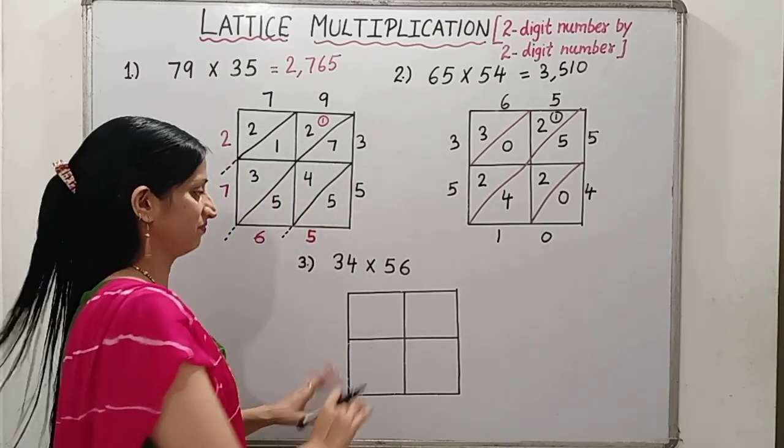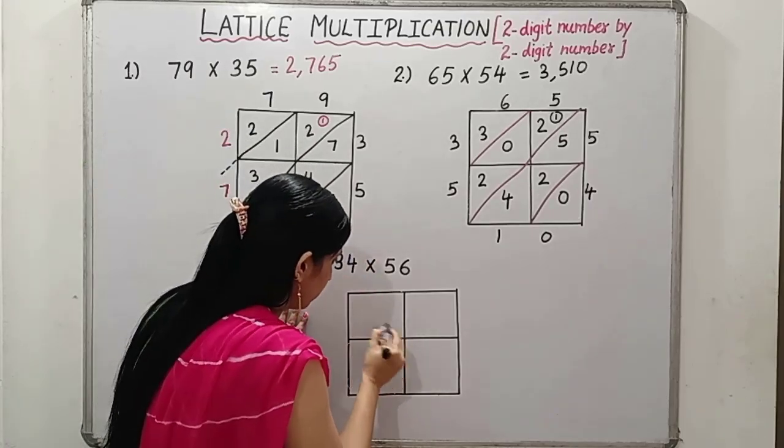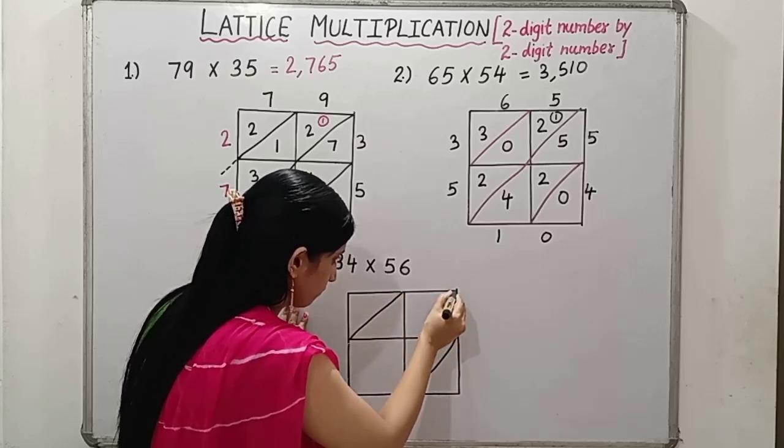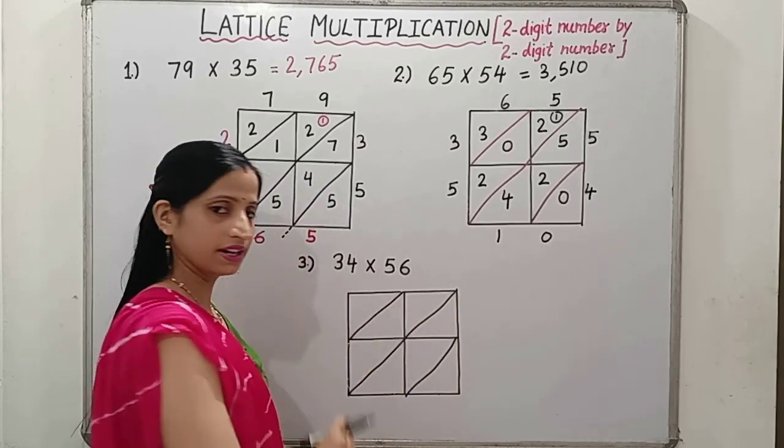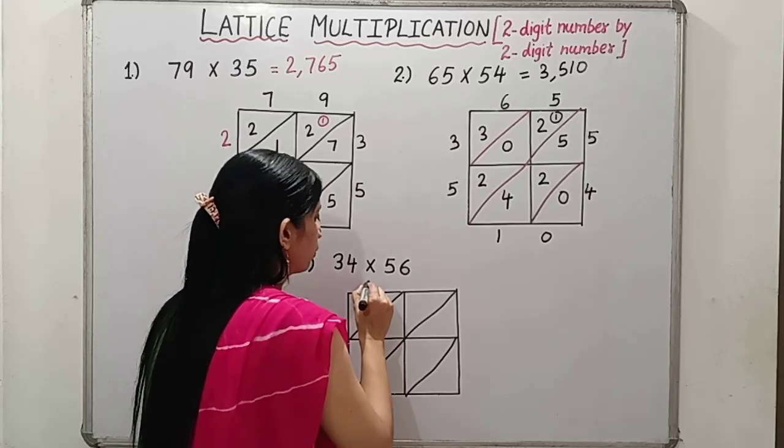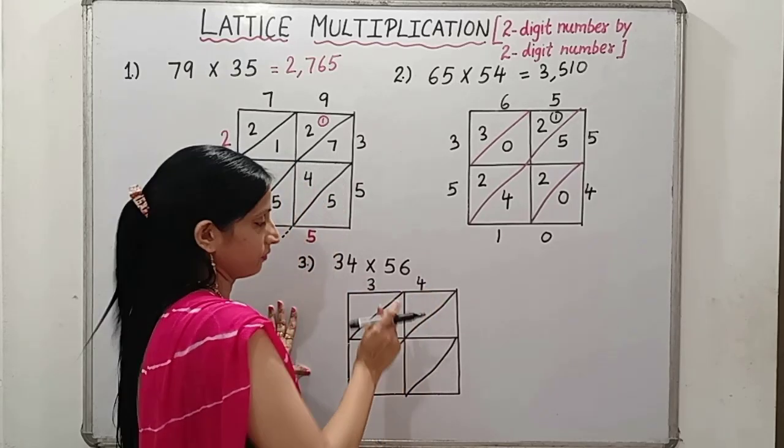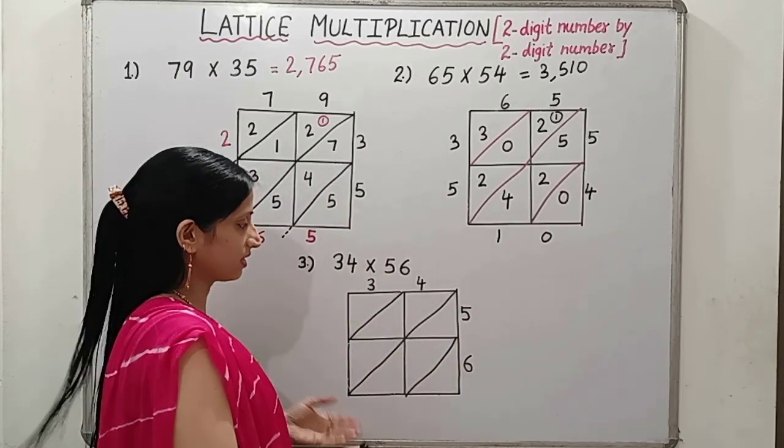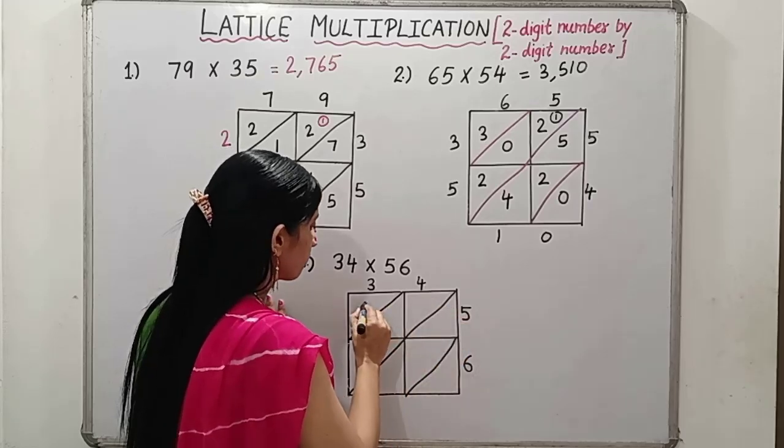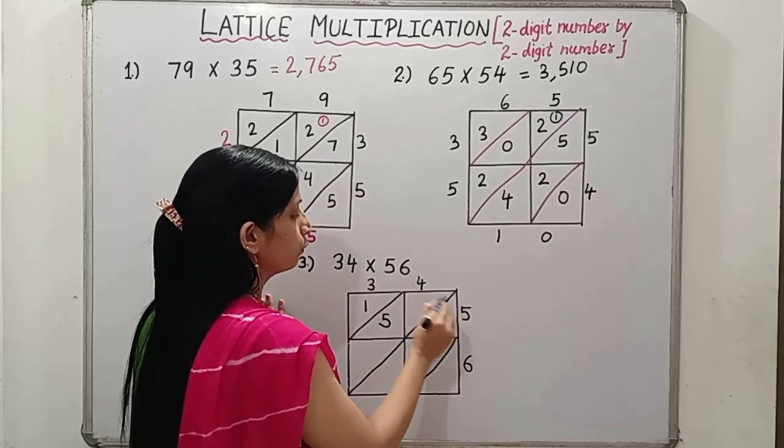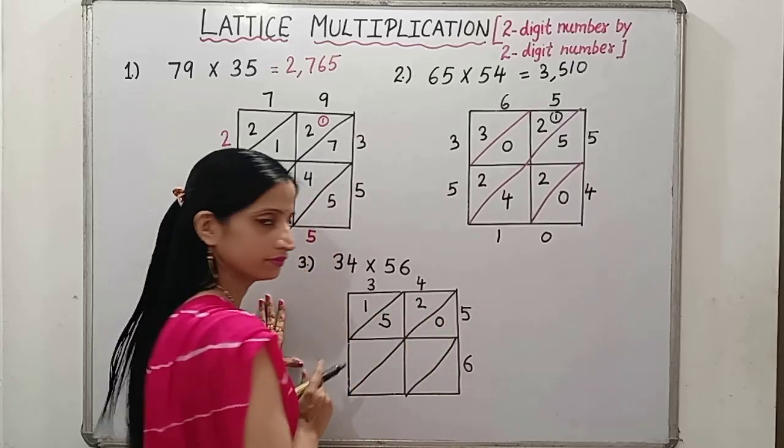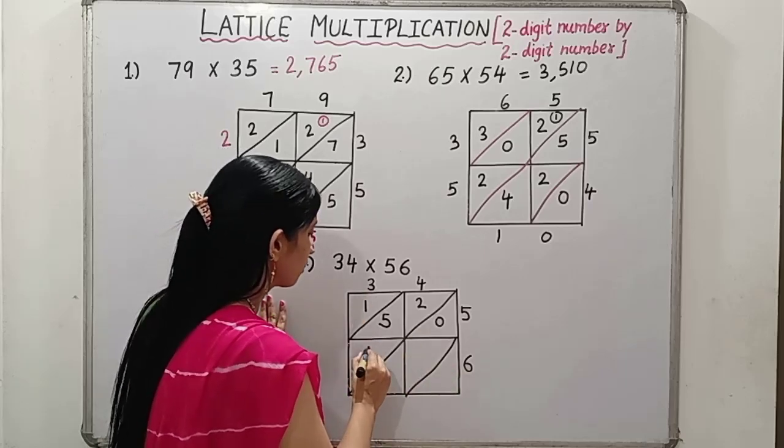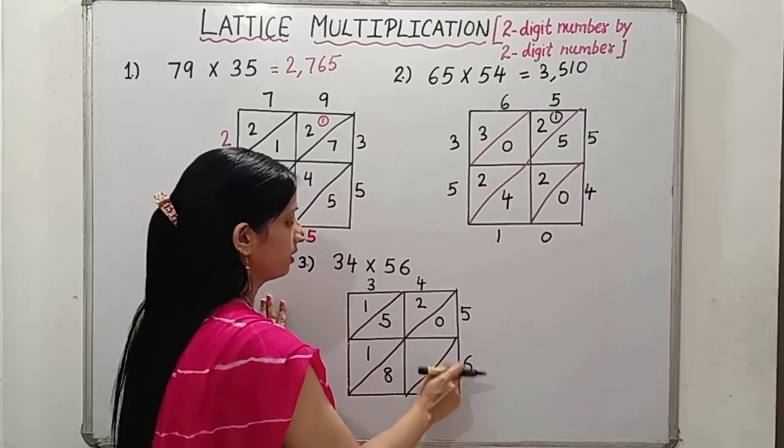Let's do one more question. So again, first draw the diagonal. Now, the next thing, 34, where should I write? Here. 3, 4. 56 on the another side. Now, let's start multiplying. 3 fives are 15. 4 fives are 20. Then, next thing, 3 sixes are 18. 4 sixes are 24.